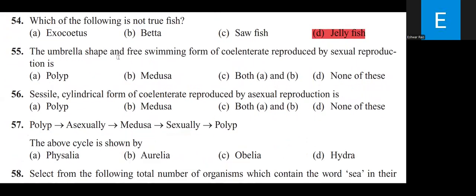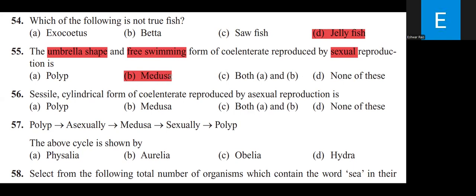The umbrella-shaped, free-swimming form of Coelenterata that reproduces sexually is Medusa. The cylindrical form of Coelenterata that reproduces by asexual reproduction is Polyp. Polyp produces Medusa asexually, and Medusa produces Polyp sexually.